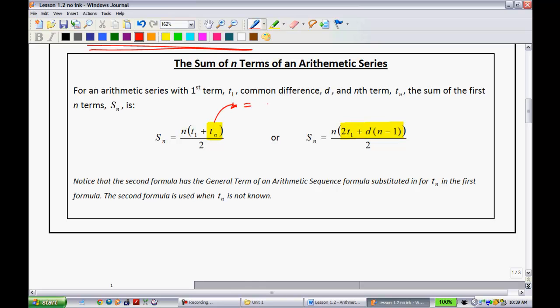If you remember, tn is equal to t sub 1 plus d times n minus 1. So, they really have all of that. If you're wondering where this 2 comes from, it's because we have a t1 there and a t1 there. Therefore, we have 2 of them. And so, we're going to go through an example where we're going to have to use this one over the other one. You're going to see 80% of the time, we're going to use that first equation. And I made a little note here. Notice that the second form has the general term of the arithmetic sequence substitute it in for it.